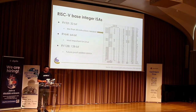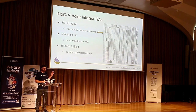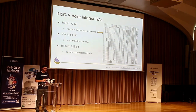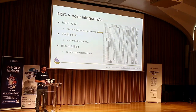The base integer ISAs start with RV32i, which is 32-bit and has fewer than 50 instructions — ideal for small embedded applications and education, since the Berkeley group also taught undergrads. RV64i is the 64-bit integer ISA, which is most important for Linux. There's even RV128i to future-proof the address space; it's not implemented yet, but it's in the specification.